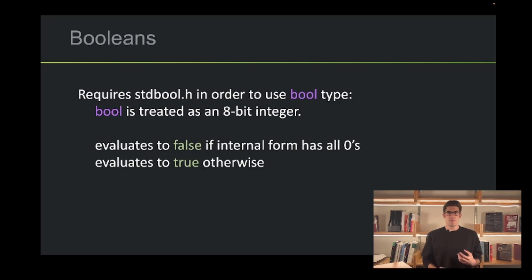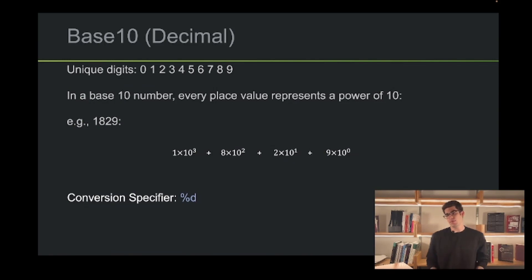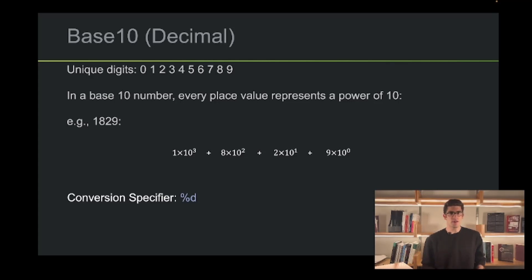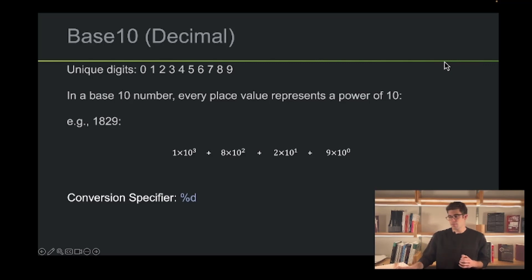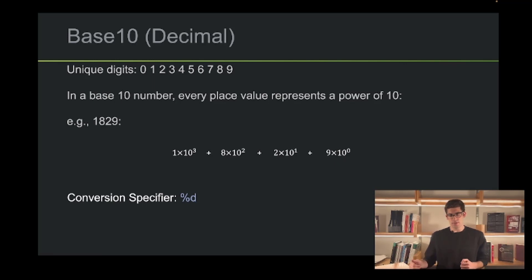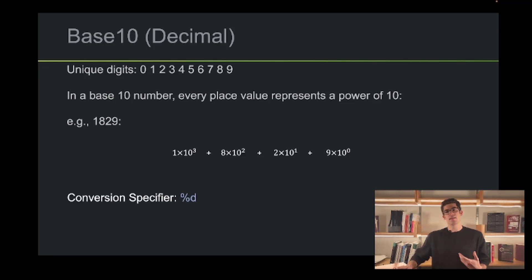That's really all we needed to know about the basic data types in C. Now let's move on to the different number systems, or bases, we can use to express values in C. Firstly, we have base 10, or decimal. Decimal has 10 unique digits ranging from 0 to 9, and in every base 10 number, every place value represents a power of 10. Looking at the number 18,029, we can separate that into the thousands place, the hundreds place, the tens place, and the ones place, and get the final value by adding all these values together. To print out a decimal value, you use the %d conversion specifier.